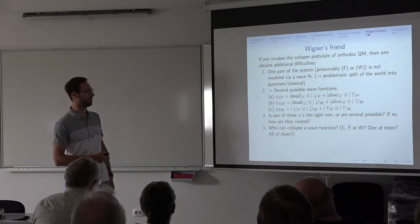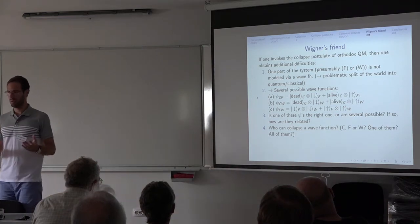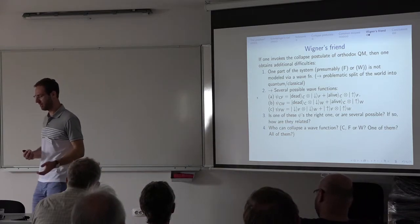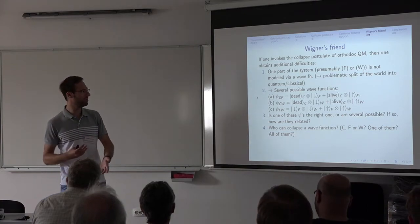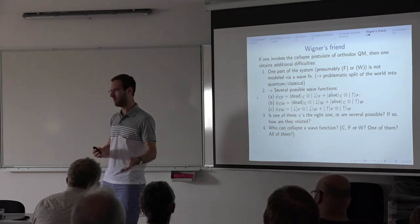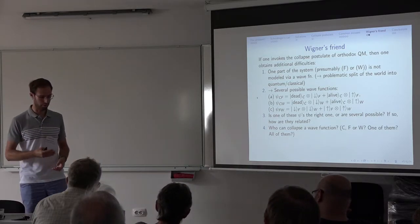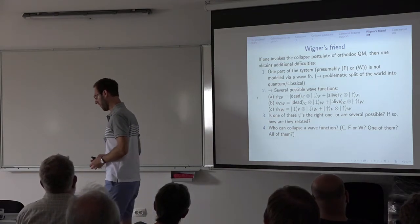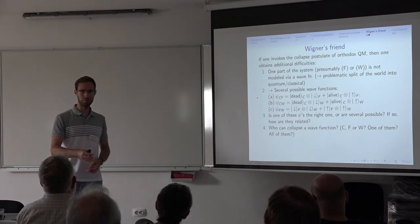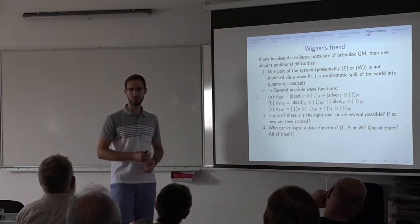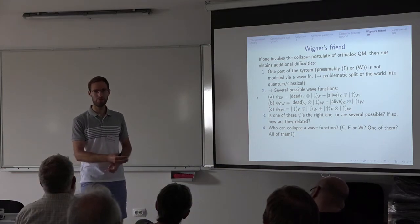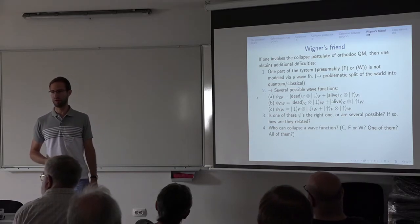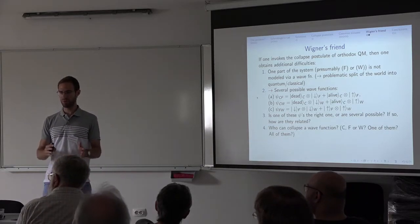Then a lot of questions arise: is one of these ψ the right one or are several possible? And if several are possible, how are they related? You should have some kind of rules for how to translate between them so that consistency arises. Related to this is the question: who can collapse a wave function? Can the cat do it? Can a friend do it? Can Wigner do it? If you go smaller and smaller — can a mouse collapse the wave function? Can a bacterium? Can a nucleus of a cell? Can a large molecule? Can an atom? If you try to be a reductionist about it, you're not going to find any sharp split about when you can collapse anything.